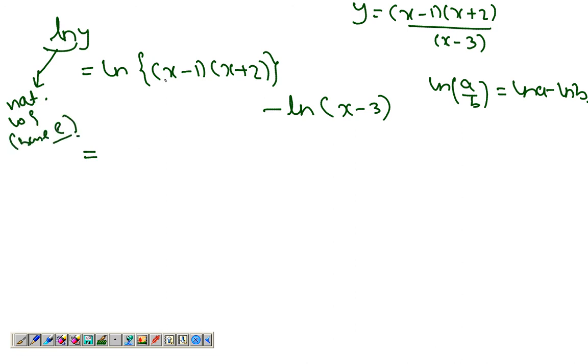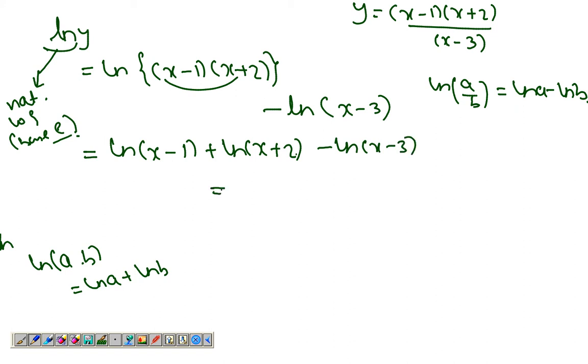Now this can further be written as log of (x minus 1) plus log of (x plus 2), since ln(a times b) is ln a plus ln b, minus ln(x minus 3). Now let's differentiate both sides. I get 1 by y dy over dx using the chain rule here, equals 1 over (x minus 1).